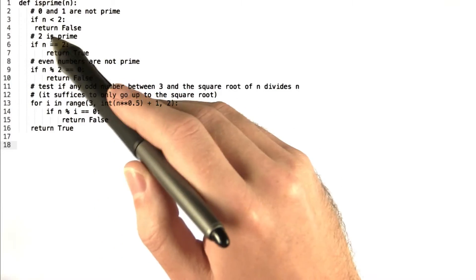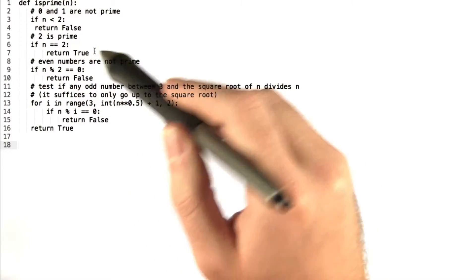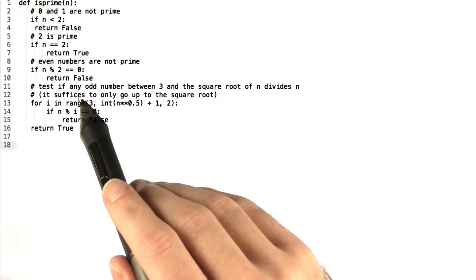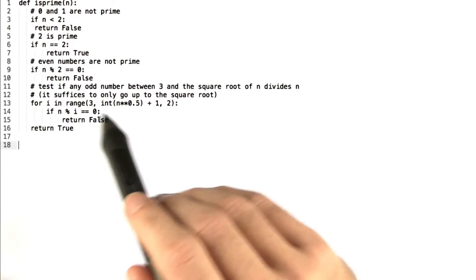If n equals 2, then we return true because 2 is prime. And then we get rid of all the even numbers because none of the even numbers other than 2 are prime. And then we check if there are any odd numbers between 3 and the square root of n that divide n.